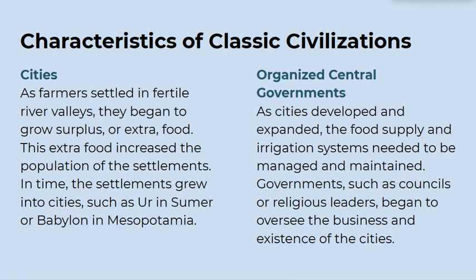Let's read about some characteristics of ancient classic civilizations. Cities: as farmers settled in fertile river valleys, they began to grow surplus or extra food. This extra food increased the population of the settlements. In time, the settlements grew into cities, such as Ur and Sumer, or Babylon and Mesopotamia.